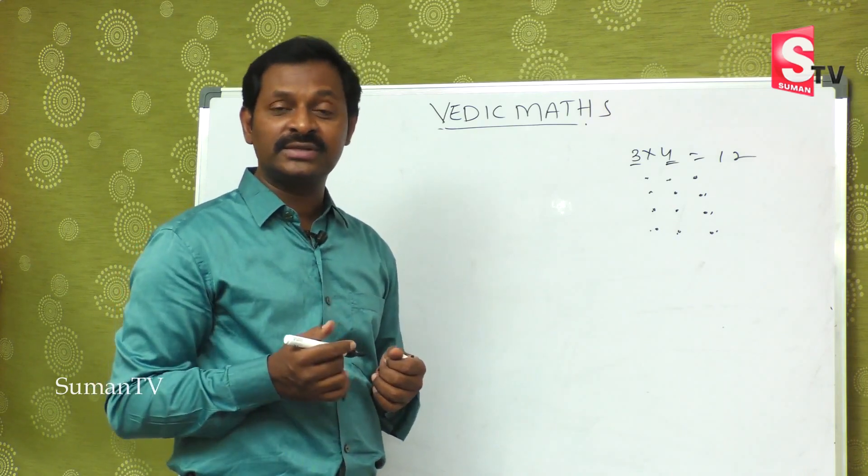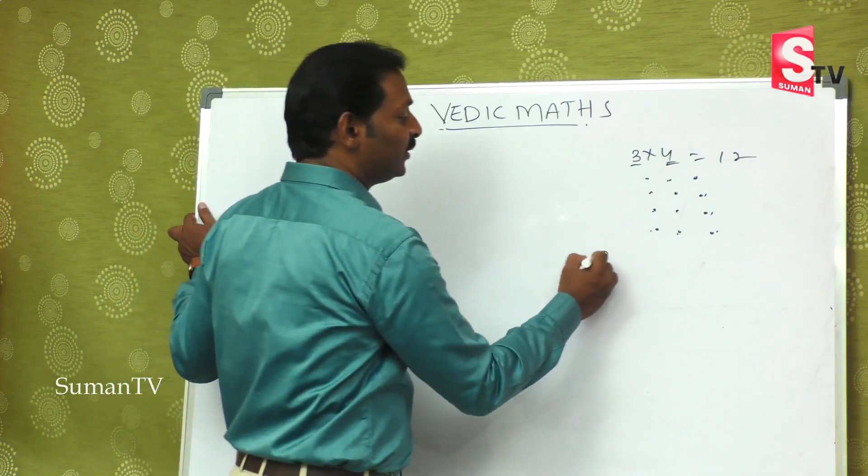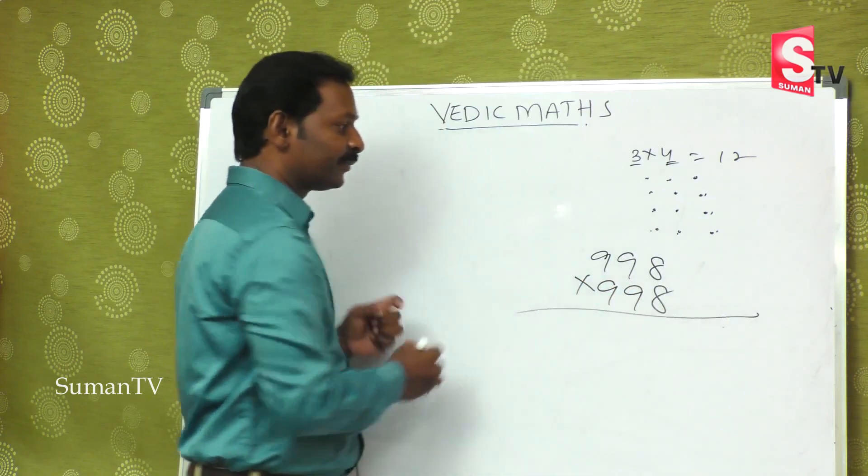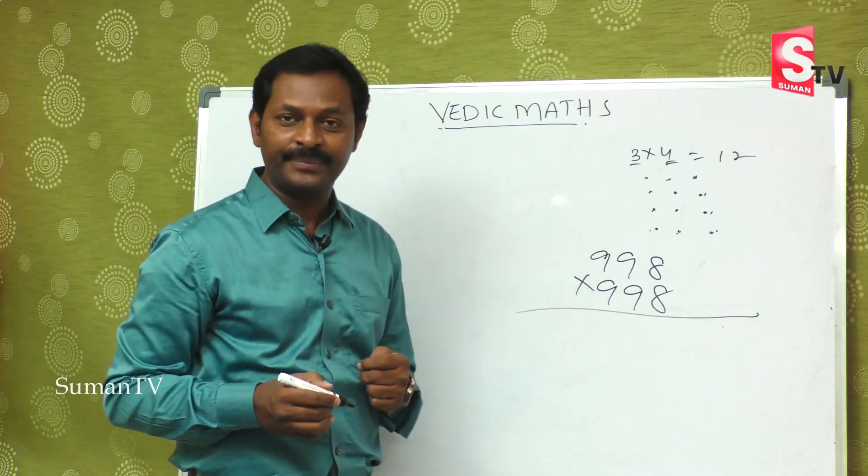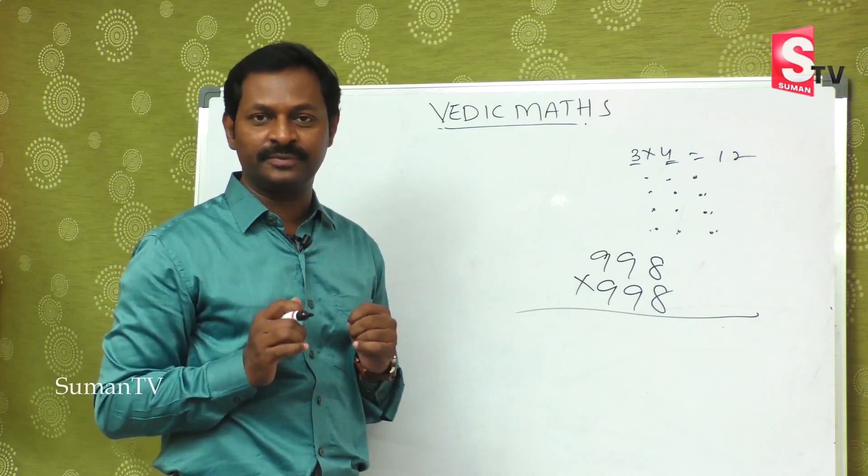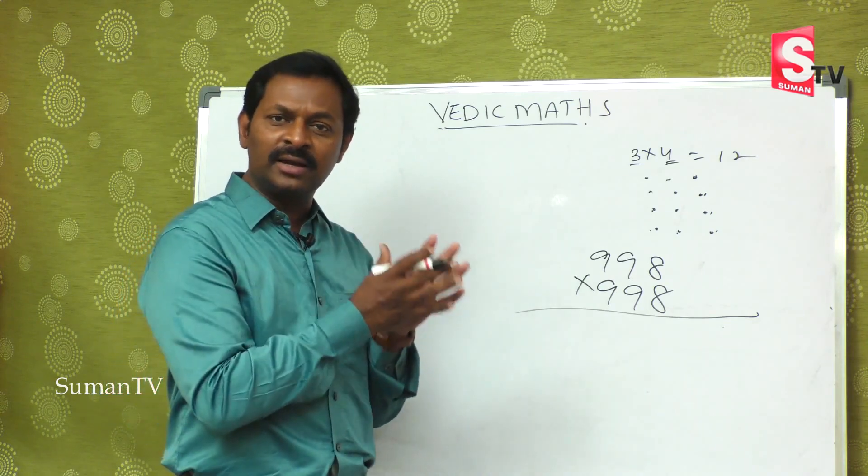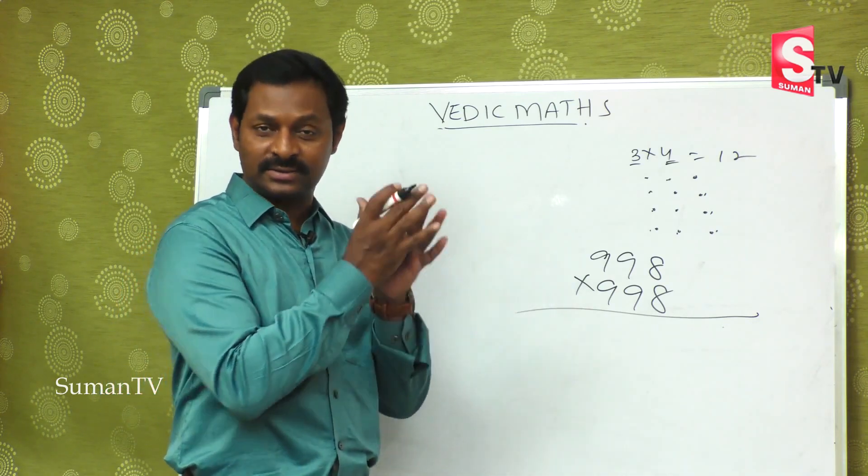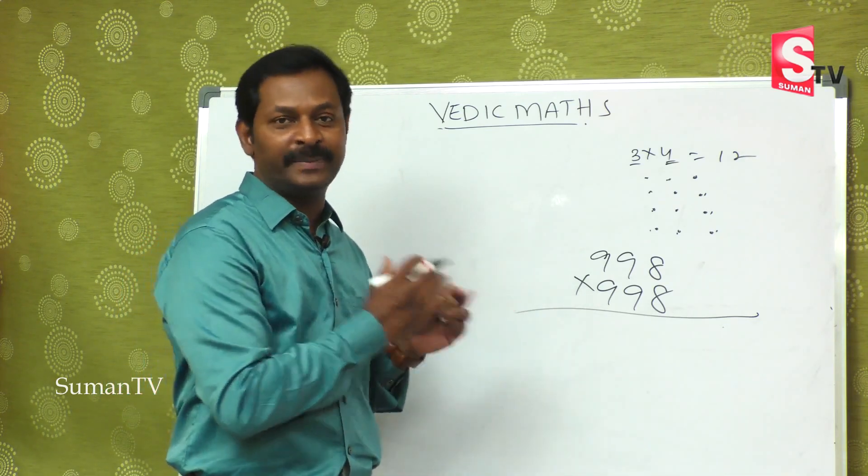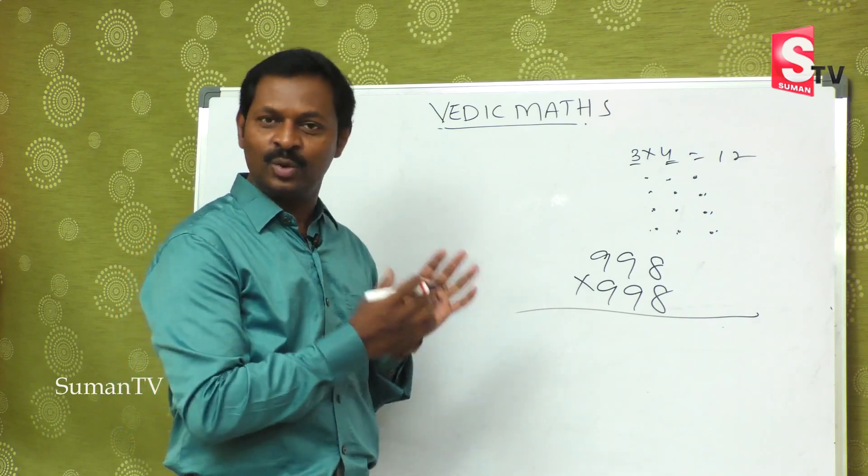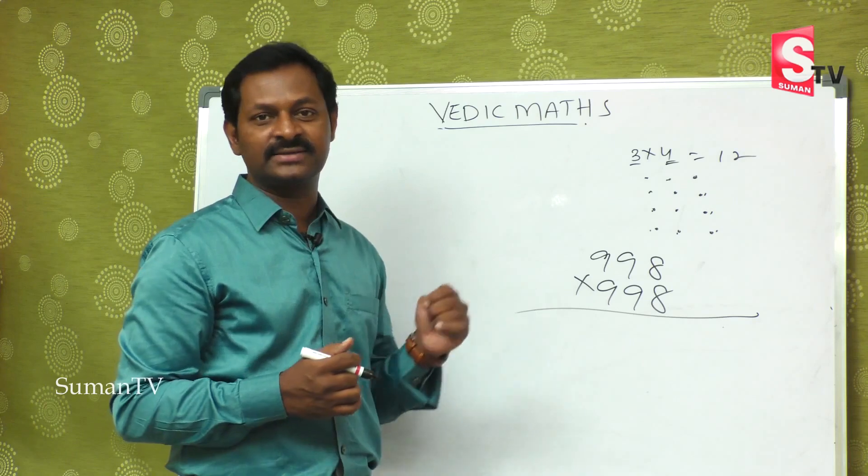But bigger numbers, suppose 998 is multiplied by 998, the dots are going to be done. Is it possible? No. This is not at all possible. In the Vedic period there are many methods and methods and methods. Today we will discuss about these things in our classroom.